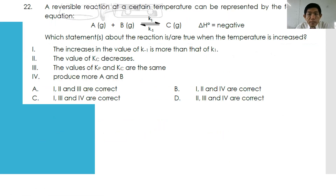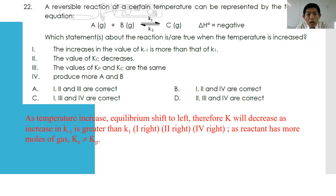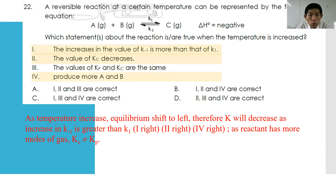Number twenty-two: for A(g) + B(g) → C, with ΔH negative. Which statements are true when temperature increases? Statement one: the increase in K₋₁ is more than K₁ — true, because as temperature increases, equilibrium shifts left (exothermic backward). So K decreases, meaning K₋₁ > K₁. Statements two and four are also true. Kc and Kp are not the same because both sides have different total moles of gas. The best answer is B.